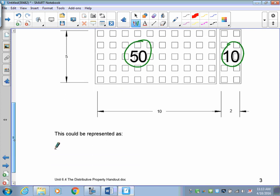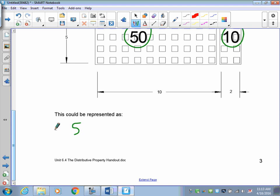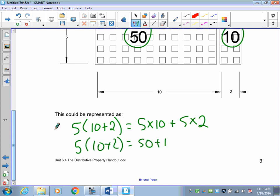This could be represented as 5 onto 10 plus 2, and that would give us 5 times 10 plus 5 times 2. All right? So we know that 5 onto 10 plus 2 is equal to 50 plus 10.